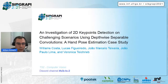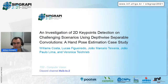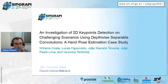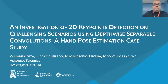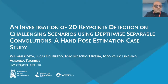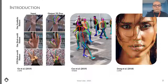Now we go to the third paper of this session: An Investigation of 2D Keypoints Detection on Challenging Scenarios Using Depth-wise Separable Convolutions — A Hand Pose Estimation Case Study. It's a work from Universidade Federal de Pernambuco. Hello, my name is William Costa and I am a researcher at Voxelabs.